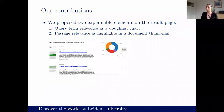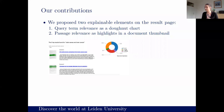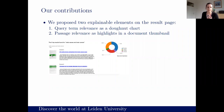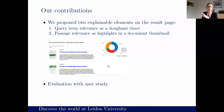We estimate the query term relevance and the most important passage, and show both on the result page. Here is an artificially created result — the query is 'radio waves and brain cancer.' There is a donut chart showing the relative relevance of each query term by color; for example, blue is 'radio,' which was more important. For each document, we show a thumbnail of the complete document and mark where the most relevant information was, so the user can estimate where to find the relevant information when they click.